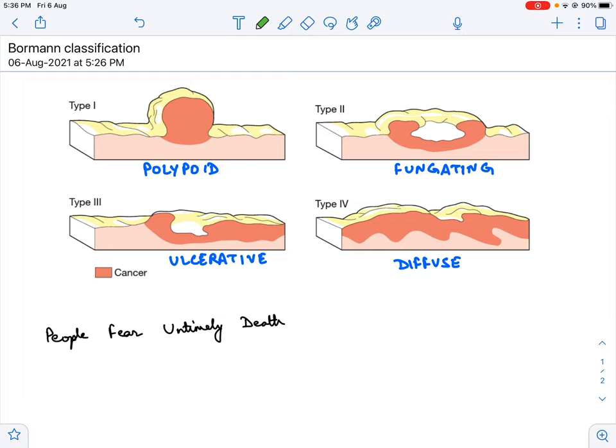That classification is called Bormann classification. It was devised in the year 1926, so it is almost a century old, but it holds good and is used till today.